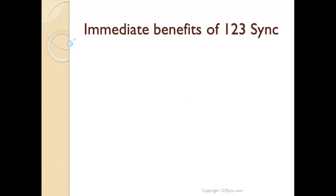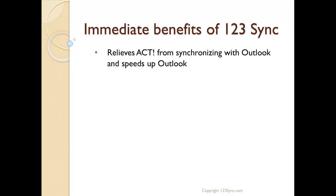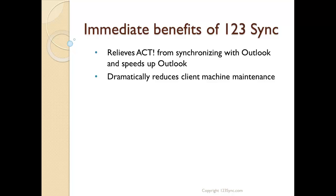The immediate benefits you'll see when using 123Sync: all the synchronization between ACT and Outlook is removed, which speeds up Outlook by a factor of 100 — turning Outlook from a very slow product into a nice one. It also reduces all the maintenance on the client machines, so you don't have to go from machine to machine because all the synchronization is done centrally.